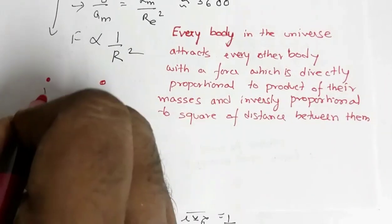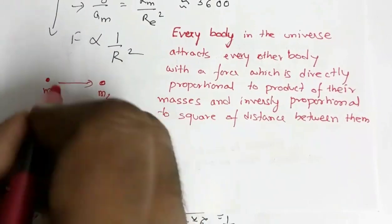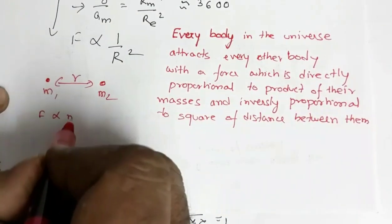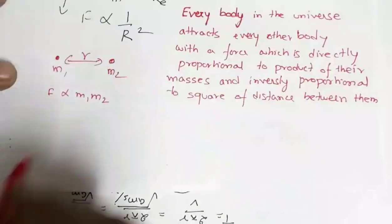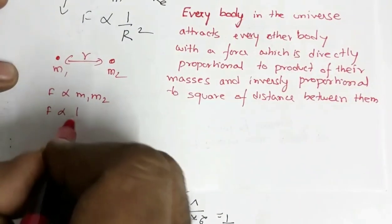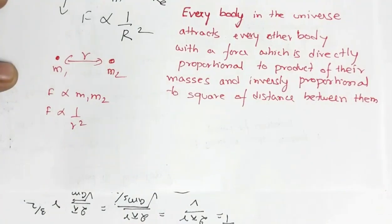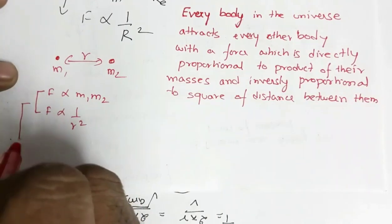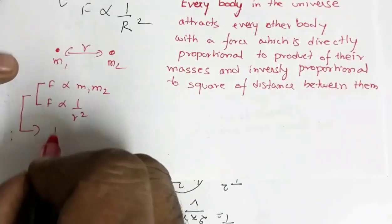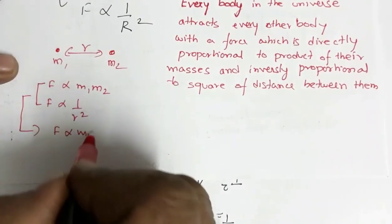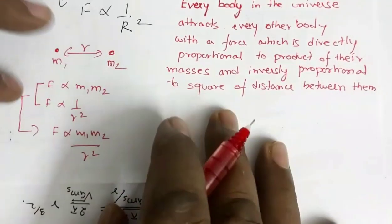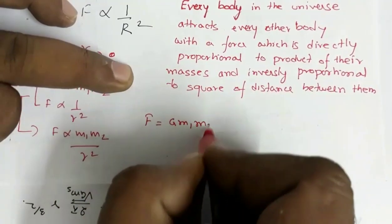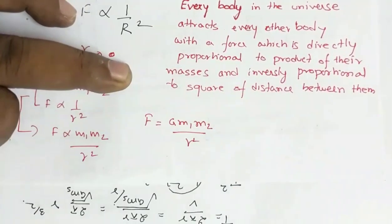If you have two masses m1 and m2 separated by distance r, then the force of gravitation between them is proportional to the product of the masses and inversely proportional to the square of the distance of separation. Combining these two proportionality conditions, we get F ∝ m1·m2 / r², and removing the proportionality symbol: F = G·m1·m2 / r².